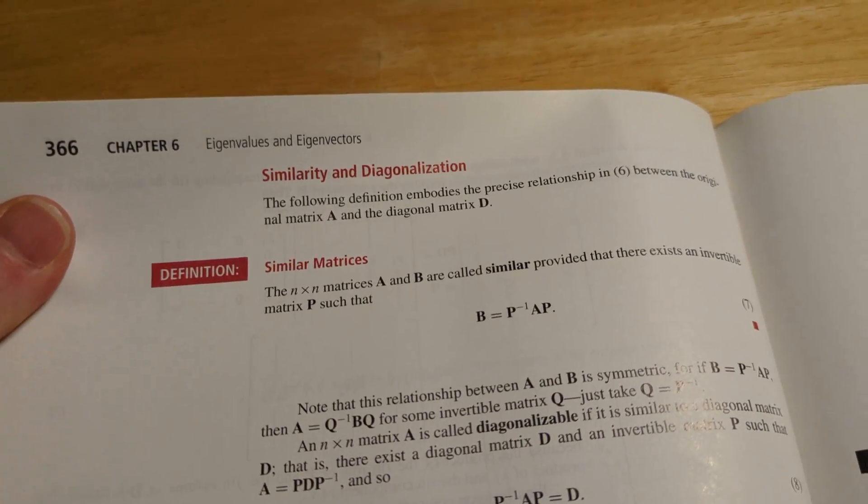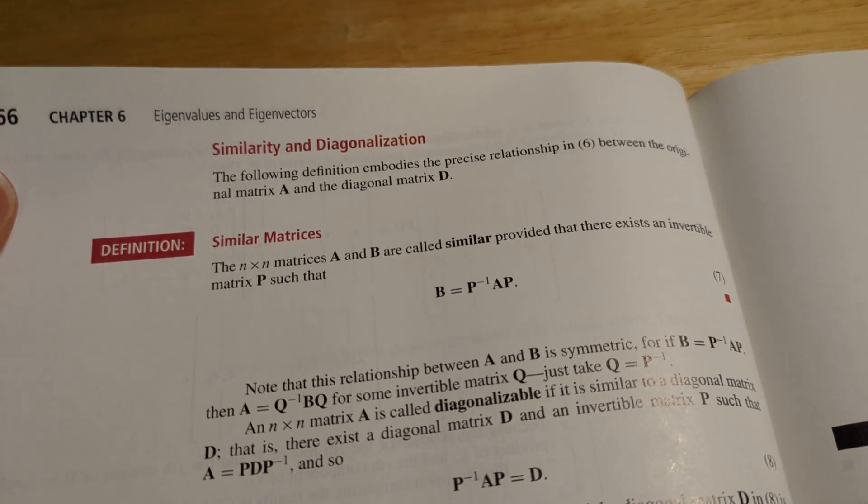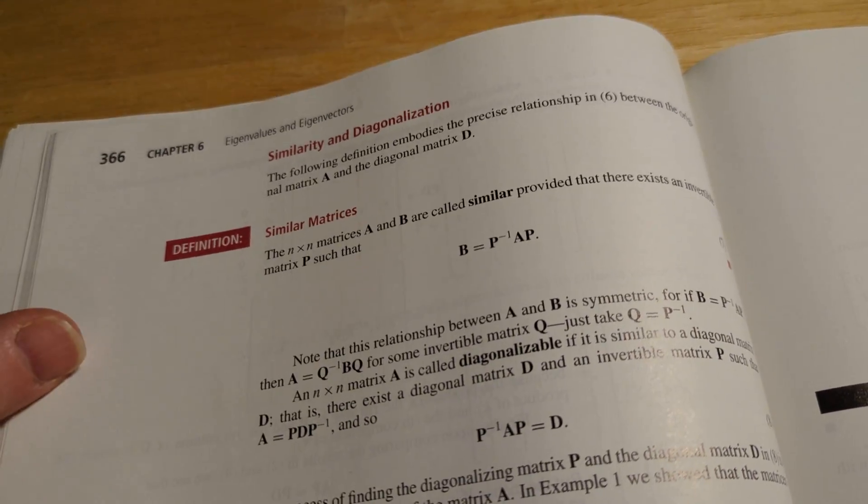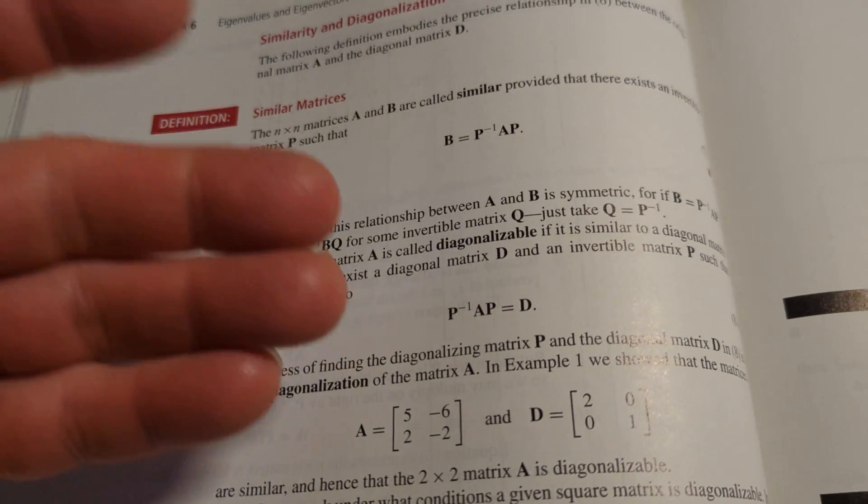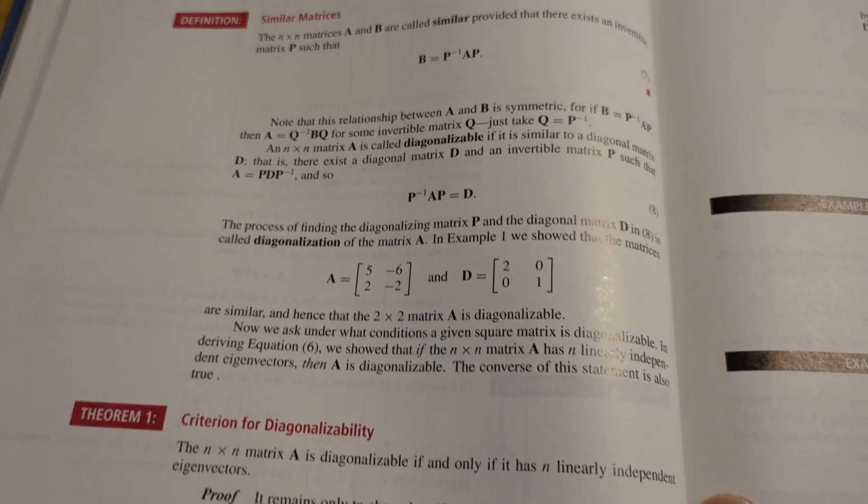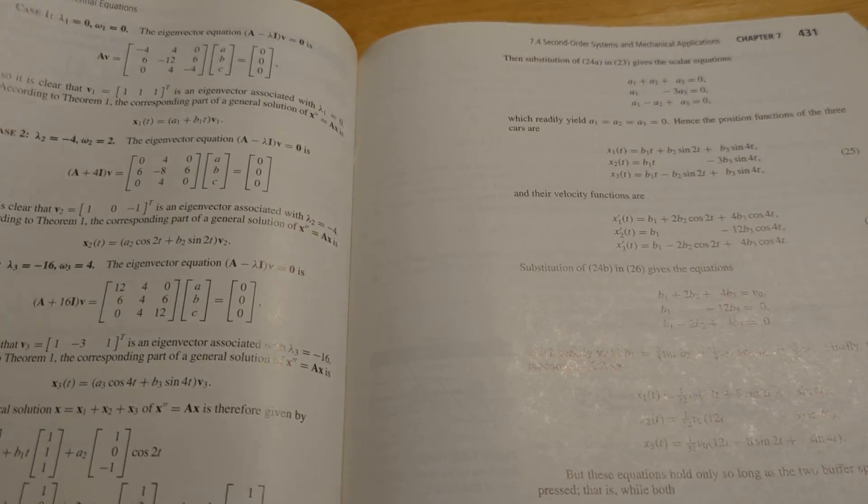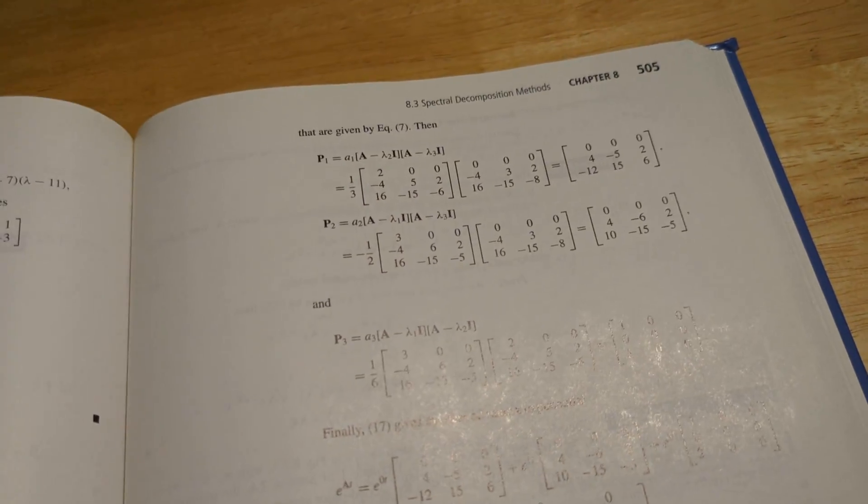And here we have some of the linear algebra. Similarity and diagonalization. So this is something that you would see in a linear algebra textbook, but it's in this book as well. So it makes it pretty cool. Yeah, I learned this in linear algebra. So overall, I think it's an interesting book. Very different from my other differential equations books. So I wanted to just talk about that and show you that it does have a lot of linear algebra in it. And I think it's pretty good.